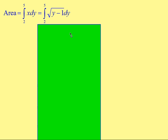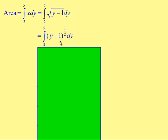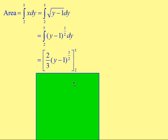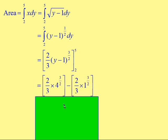We have the integral of the square root of y take away 1, with respect to y, between 2 and 5. Rewrite the square root as the power of one half: y take away 1 to the power of one half. Add 1 to the power — 1 add 2 is 3, so it becomes 3 over 2. Divide by that new power: dividing by 3 over 2 is the same as multiplying by 2 thirds. Substitute in 5 and 2. For the upper limit: 5 take away 1 is 4, so it's 4 to the power of 3 over 2. For the lower limit: 2 take away 1 is 1, so it's 1 to the power of 3 over 2. Then it's 2 thirds times that expression.